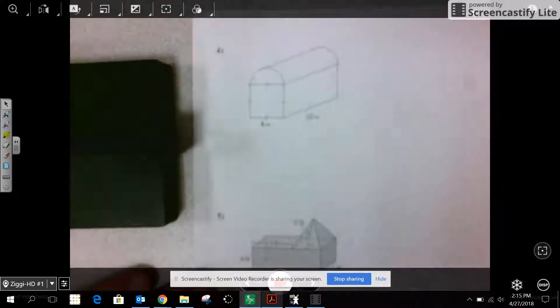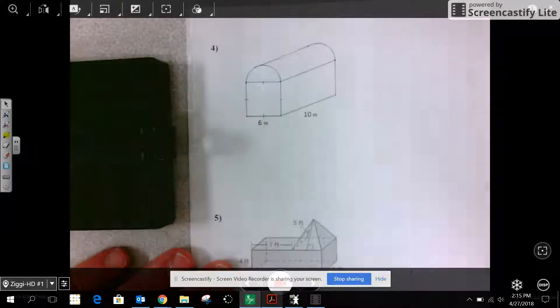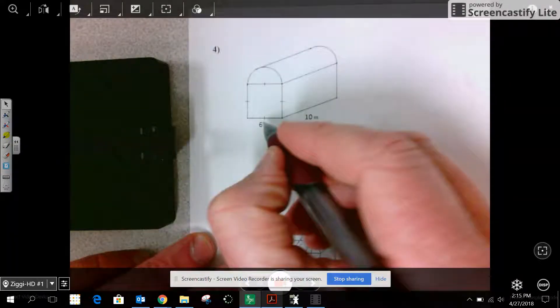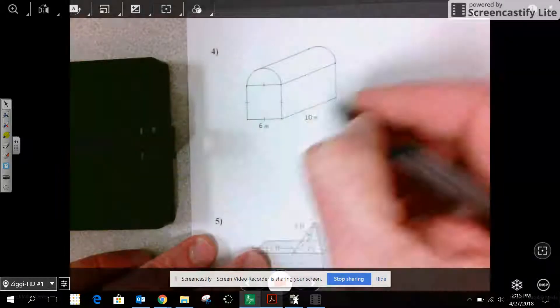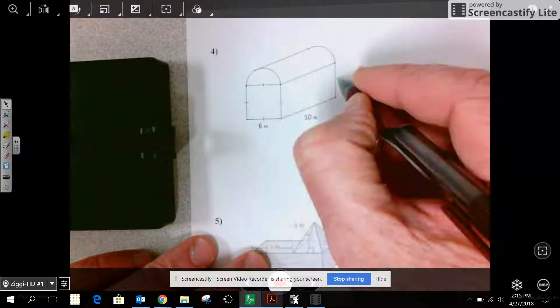Now I have one that's a little more complex. Volume. I have a half of a cylinder. I have some tick marks on here. So that's 6. That means the height is 6.